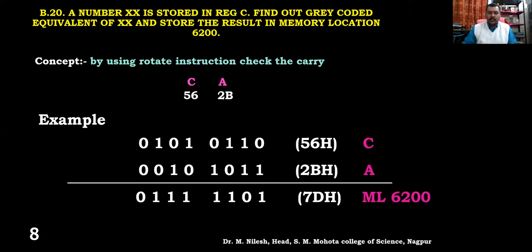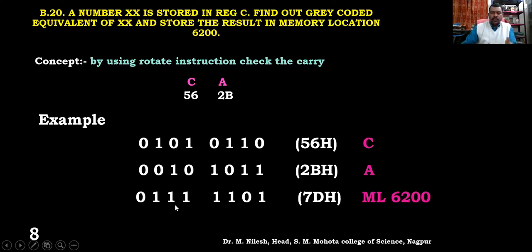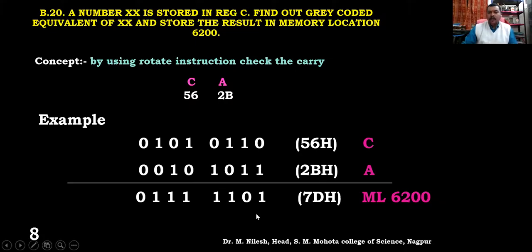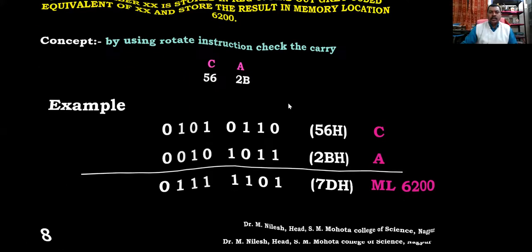If we convert this binary result to hexadecimal, it gives us 7D. So this is seven: 1+1+1 gives four plus two plus one, that is seven. And this is 8+4=12, plus 1=13. Thirteen means D in hexadecimal. So this number is 7D. While doing this program, we should know what the result would be — 7D — which we have to store in memory location 6200.